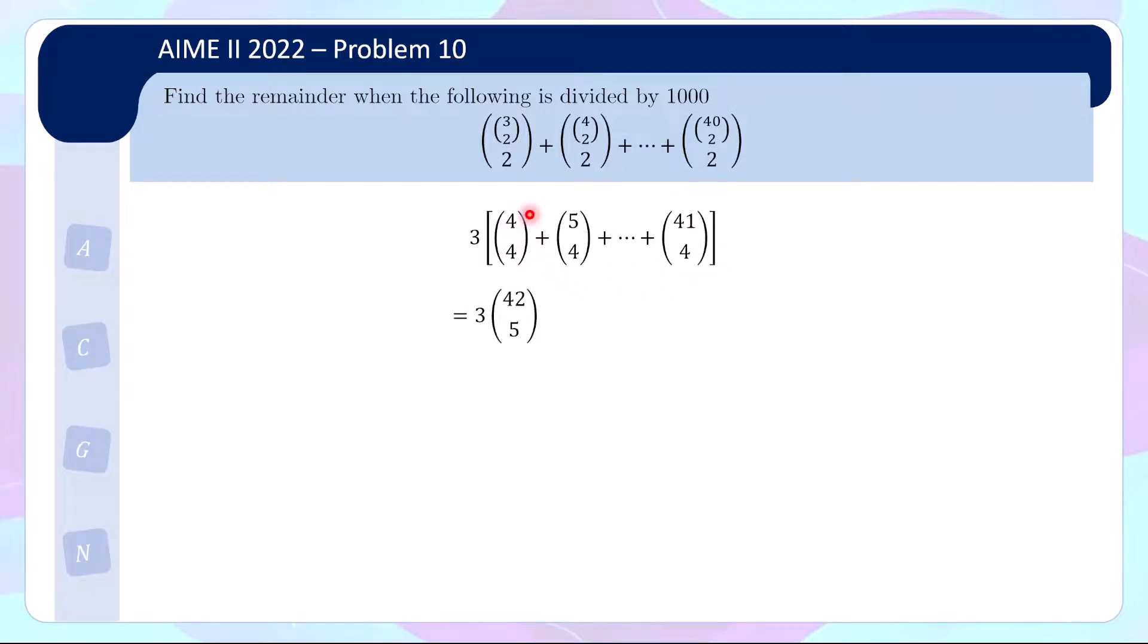And I think some of us might be very familiar with how to use a combinatorial identity to evaluate this. Basically this is 42 choose 5 and for those who are not so familiar, actually you can quickly derive this from a simple story. If you have 42 objects and you are choosing 5, you can consider the case of what is the largest number chosen. So if 42 is the largest number chosen, I have to choose 4 from the remaining 41. That's 41 choose 4, and then if 41 is the largest number chosen, then I have to choose 4 from the remaining 40 which is 40 choose 4. And similarly so on and so on. So that gives me actually 42 choose 5 equals to this expression here.